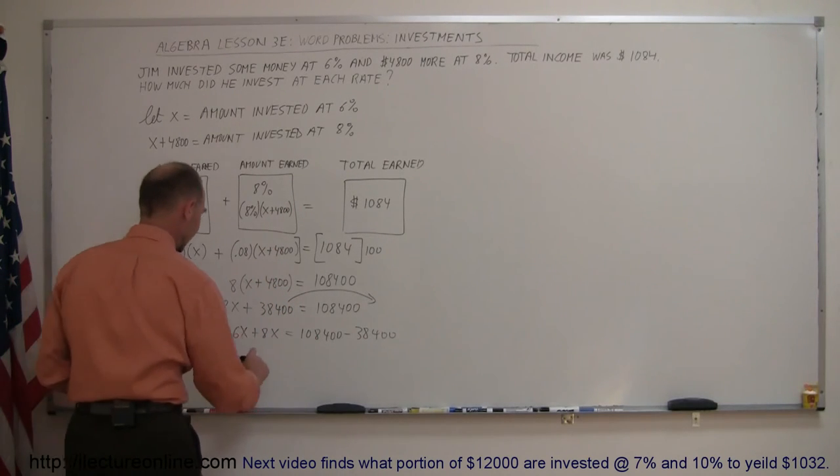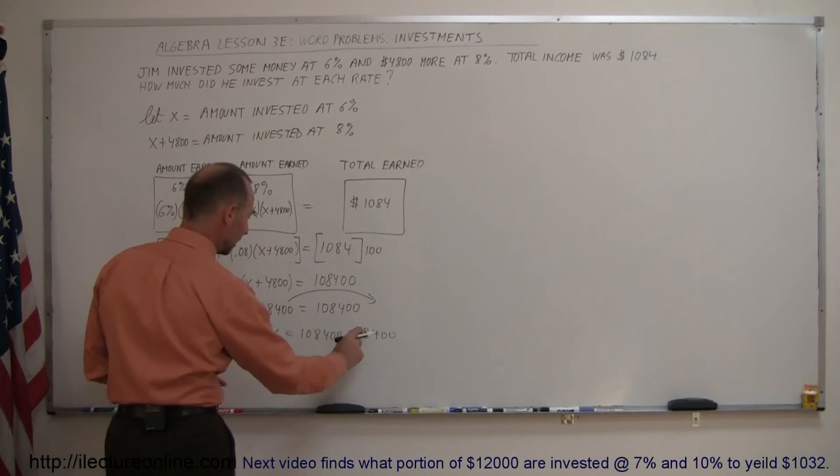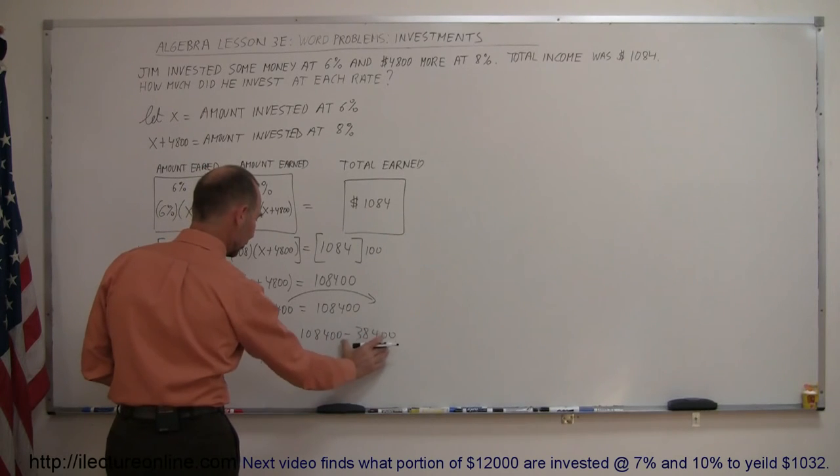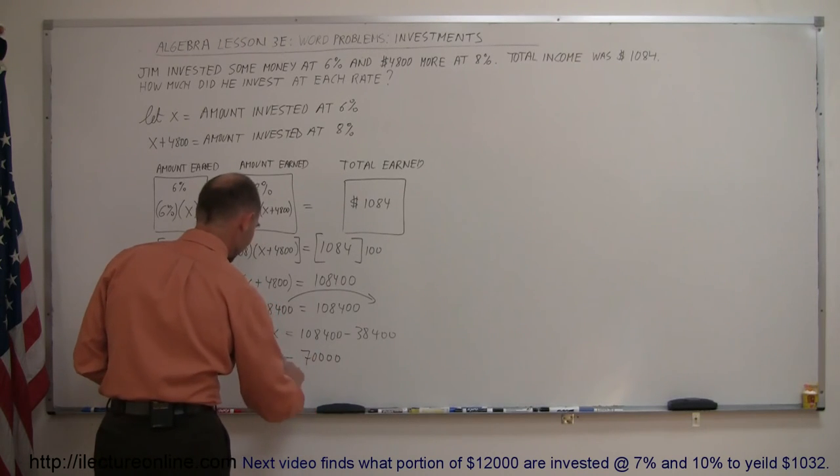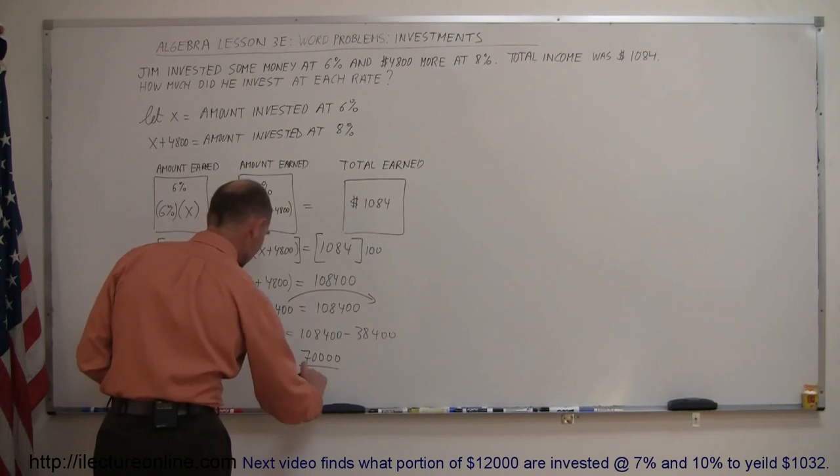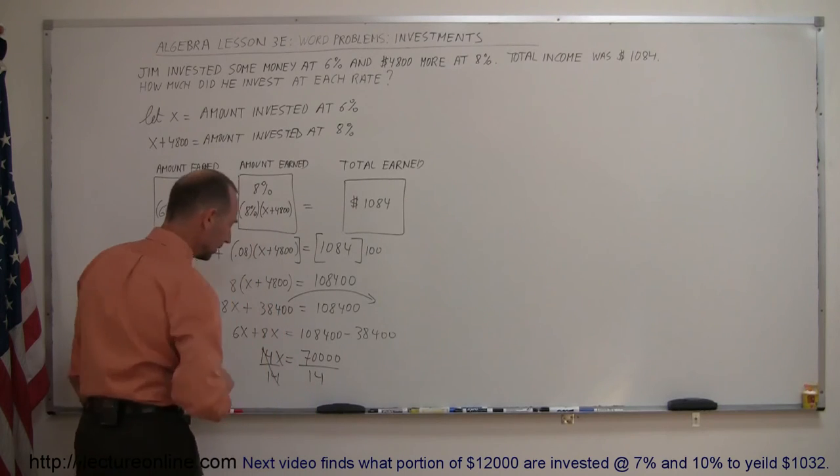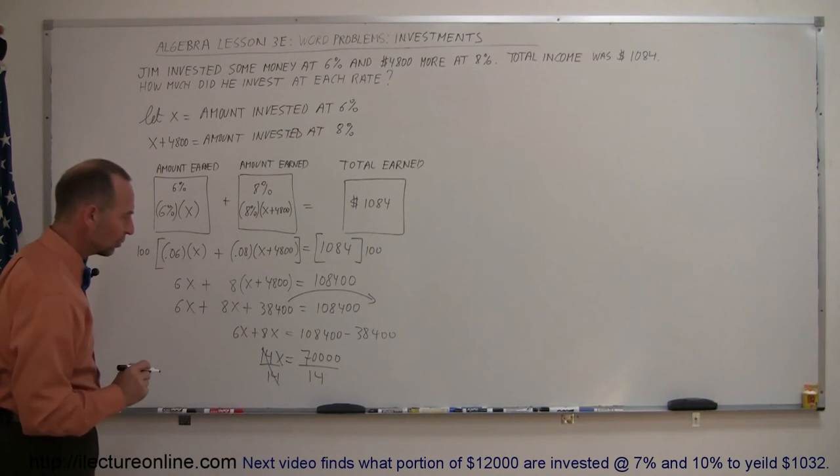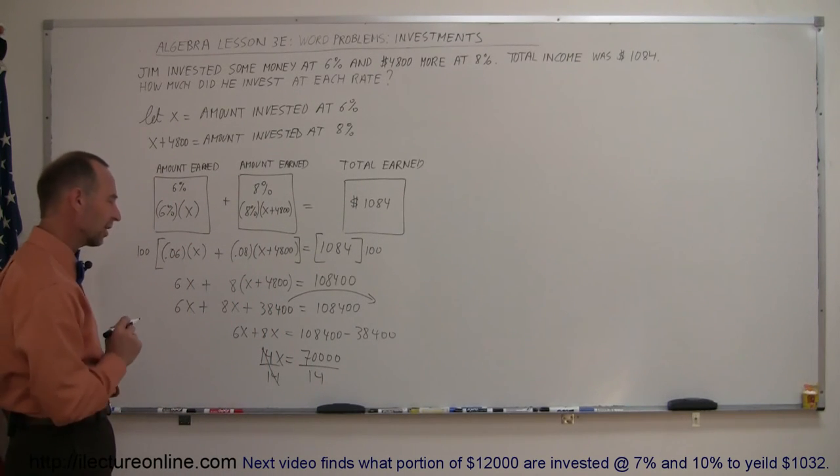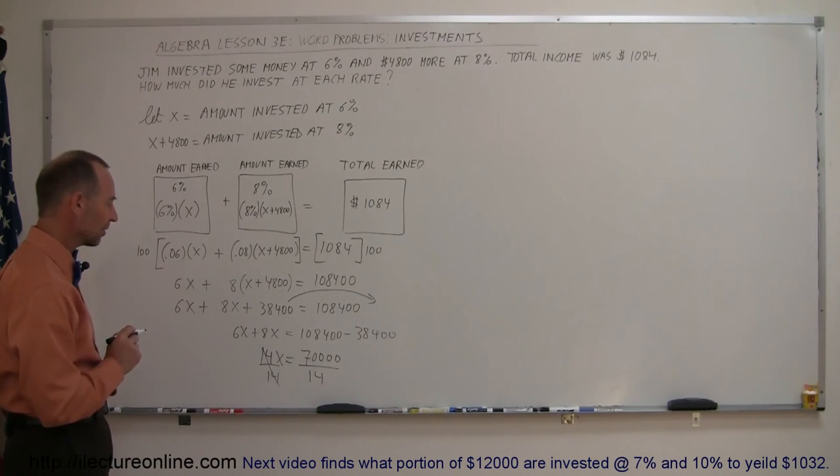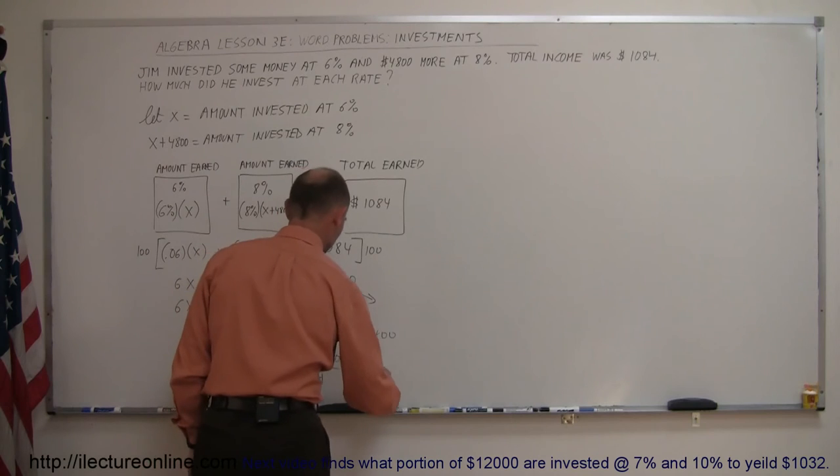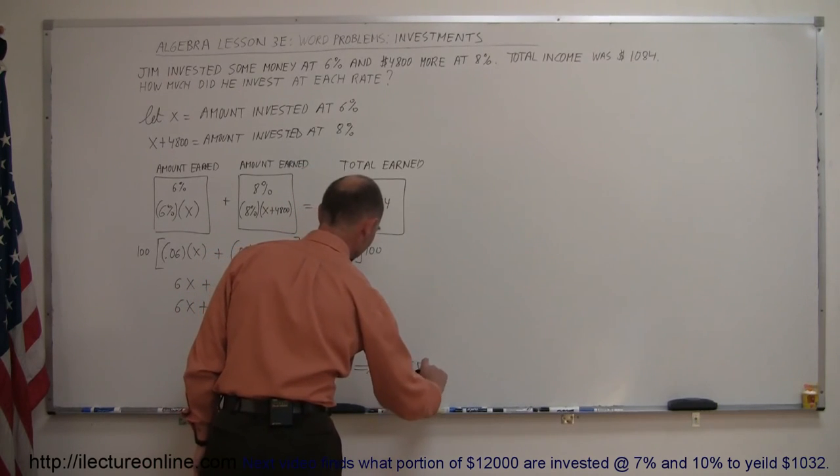6x plus 8x is 14x. And this minus that, the 400s cancel out and the 8,000s cancel out, that gives me 70,000. And finally, I divide both sides by the numerical coefficient of x. And 14 goes into 70,000. It looks like 5000 times, 5000 times 10 is 50,000. That's right. So that means that x equals 5000.